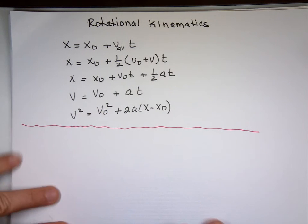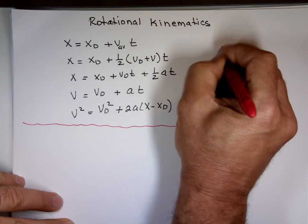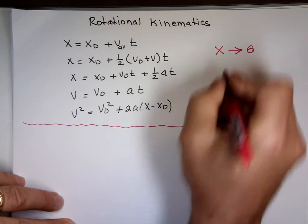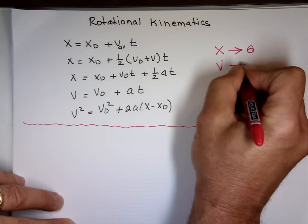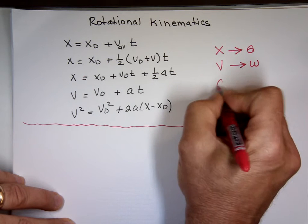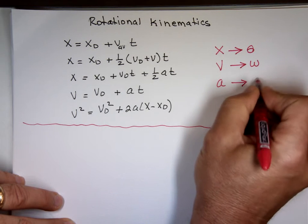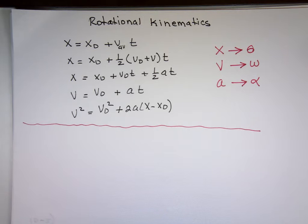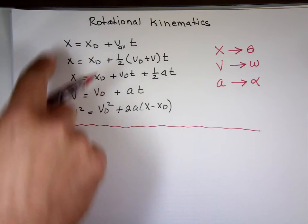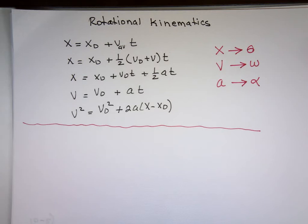We're going to take these equations, and every time you see x, you're going to replace it with theta. And every time you see v, we're going to replace it with w. And every time I see a, I'm going to replace it with alpha. Because that's when things are going in a circle. We use these letters. So these five equations, 1, 2, 3, 4, 5.